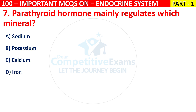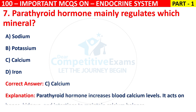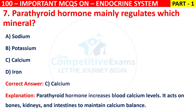The right answer is C, that is calcium. Parathyroid hormone increases blood calcium levels. It acts on bones, kidneys, and intestines to maintain calcium balance.